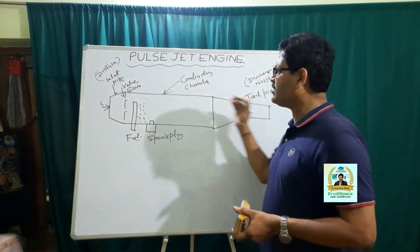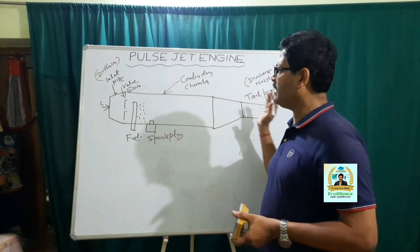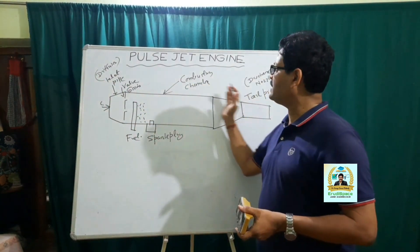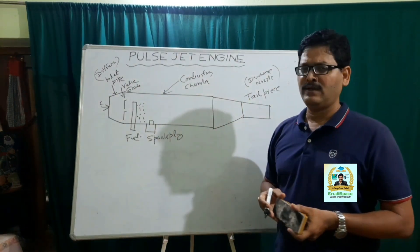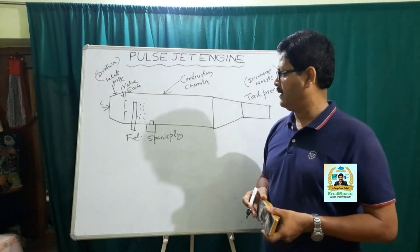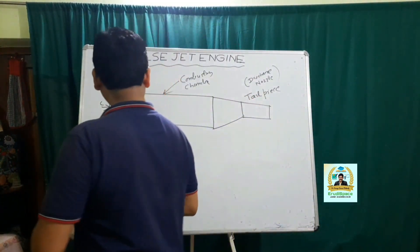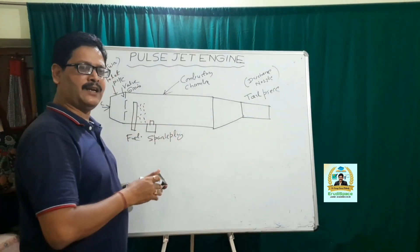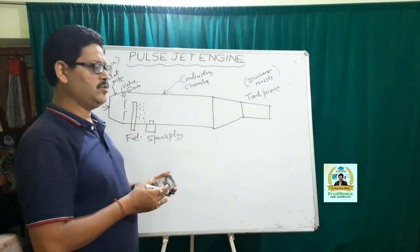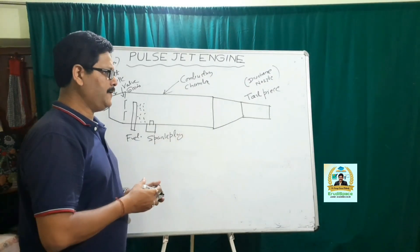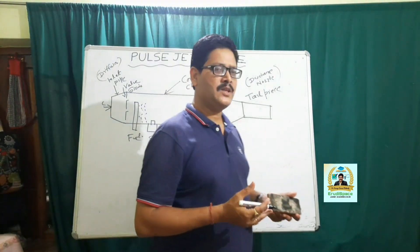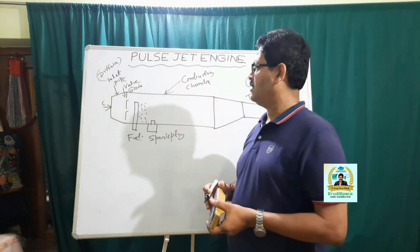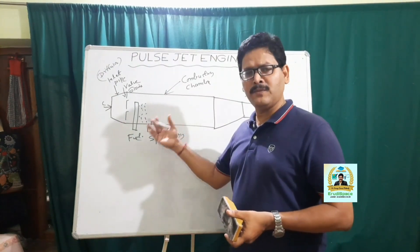This exit velocity is much higher than the velocity at which air is entering the system. As a reaction to this, thrust is developed, which helps in the motion of the engine. Another important point is that the pulse jet engine cycle is close to the Otto cycle, unlike other jet engines where it is close to the Brayton cycle.